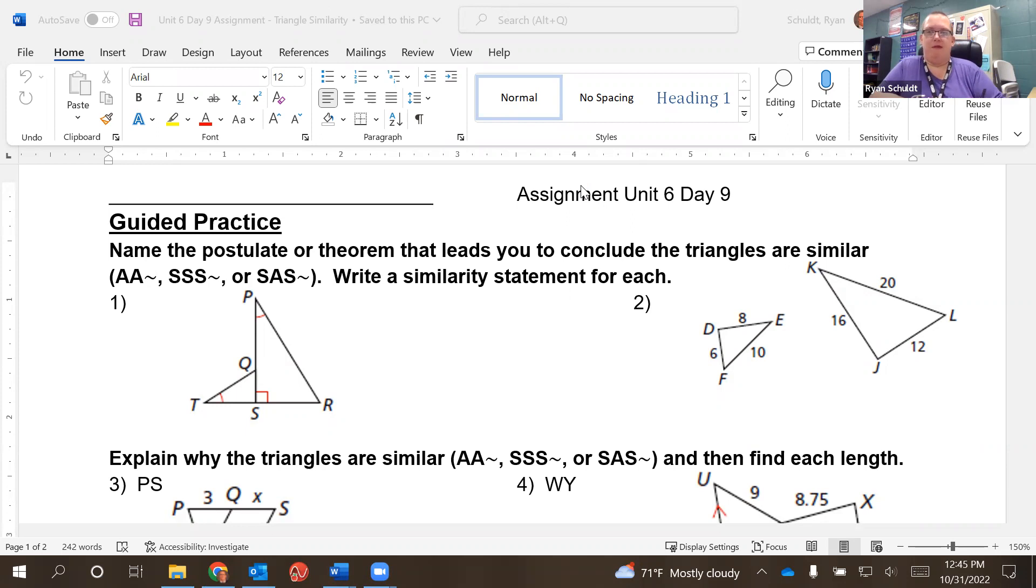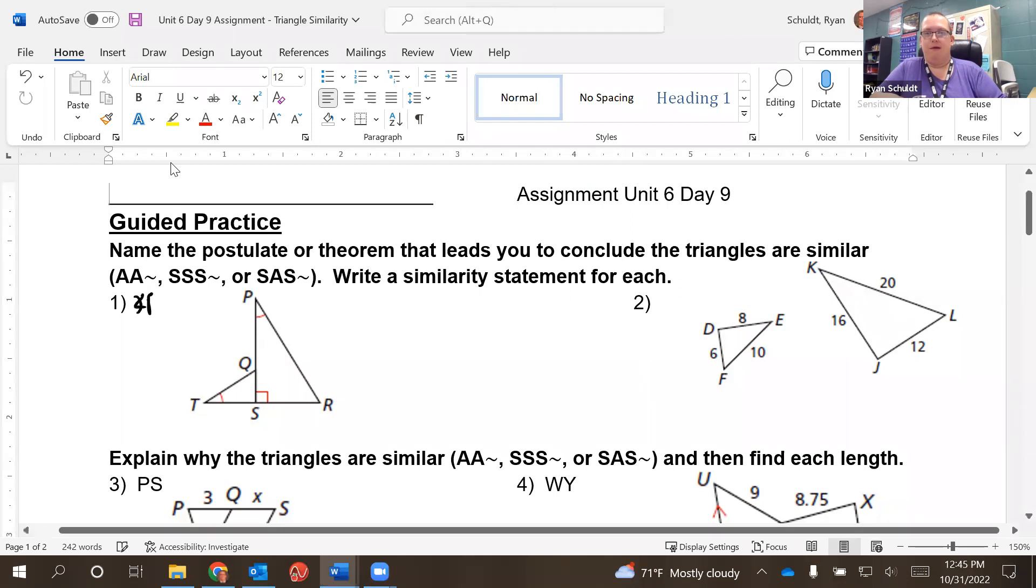Well, let's see here. I see where angle P is congruent to angle T. And then we have a couple of right angles down here. So let's see, that's an angle, that's an angle. So these are similar by angle, angle similarity.